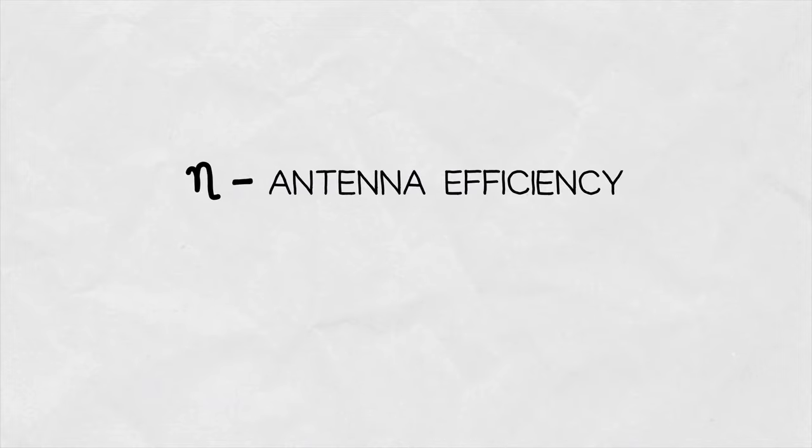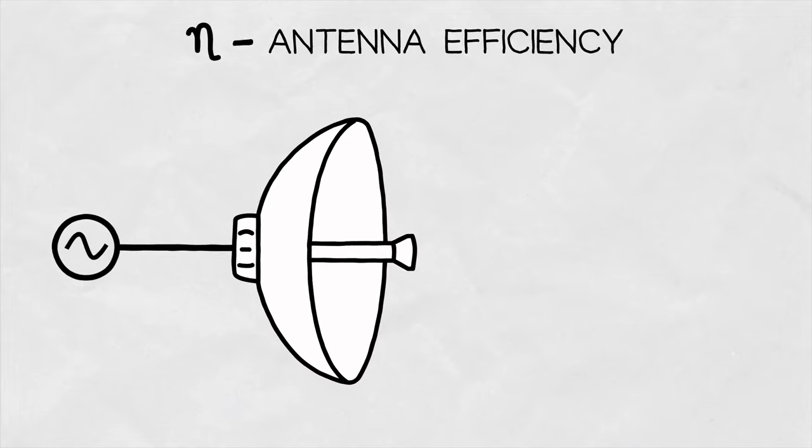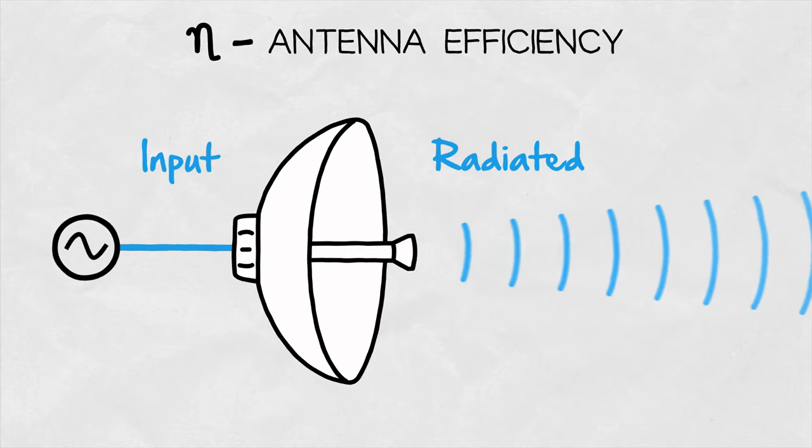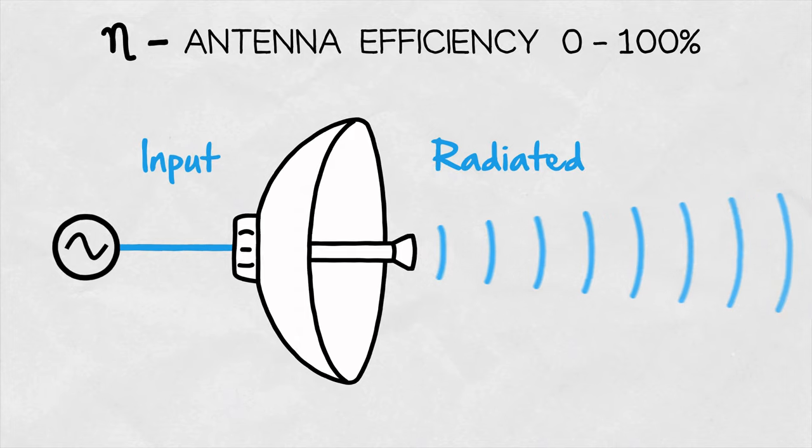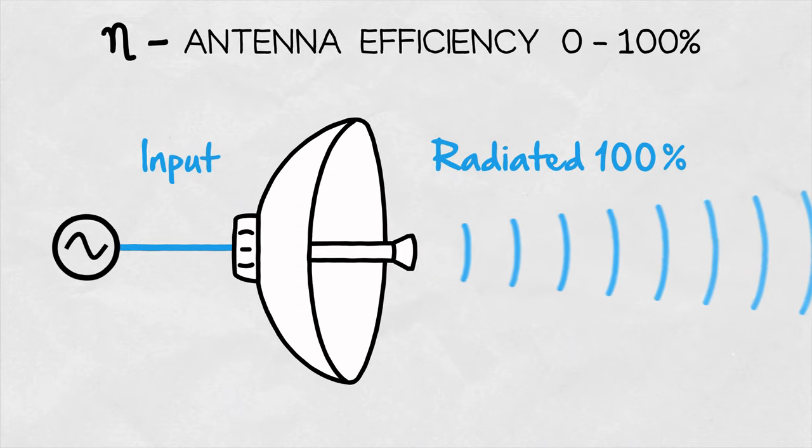Radiation efficiency is closely tied to antenna gain and tells us what part of the RF signal energy delivered to the antenna is radiated into free space. It spans values from 0 to 100 percent, where 100 percent would be the ideal.